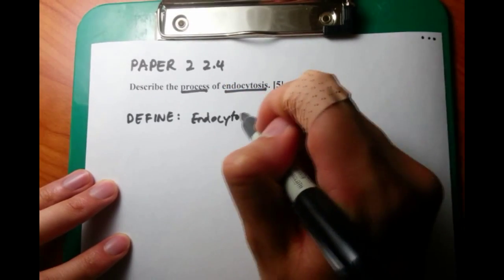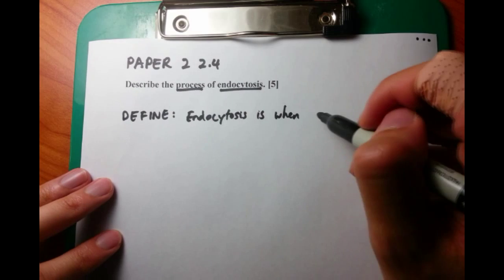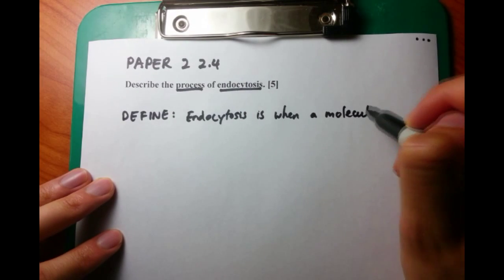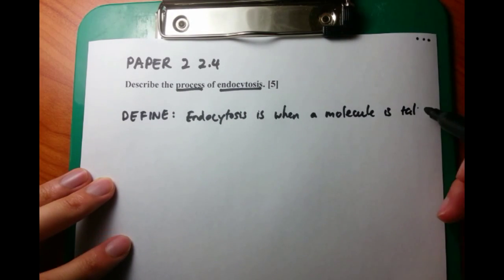Endocytosis occurs when a molecule is taken into a cell from outside the cell. Think of it as gobbling up something.